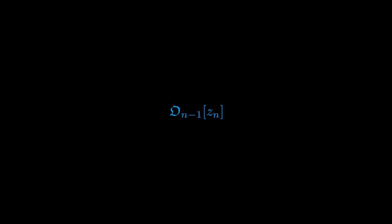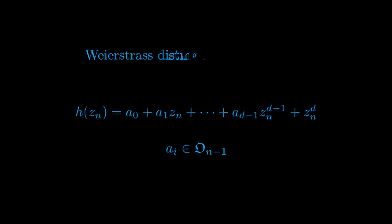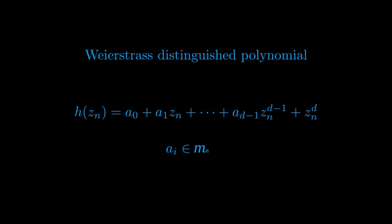To investigate the properties of rings of germs of holomorphic functions at a point, it will be interesting to consider the polynomial ring over the commutative ring of germs of n−1 holomorphic functions. In particular, we will see that a certain chain of inclusions holds, where the last inclusion is a conclusion of the Weierstrass Preparation Theorem. The ring O contains polynomials of the form a_0 + a_1·z_n + ··· + a_{d−1}·z_n^{d−1} + z_n^d, where the a_i's are germs of holomorphic functions at the origin. If the coefficients lie in the maximal ideal m, such a polynomial is called a Weierstrass polynomial, or sometimes a distinguished polynomial.